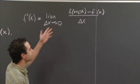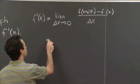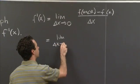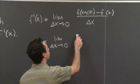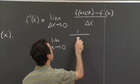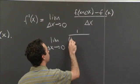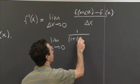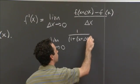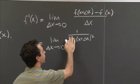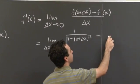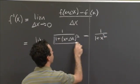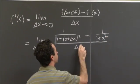Now, in our case, we have a nice formula for f(x). So this is equal to the limit as delta x goes to 0 of 1 over the quantity (1 + (x + delta x)²) minus 1 over (1 + x²), and then the whole thing is over delta x.